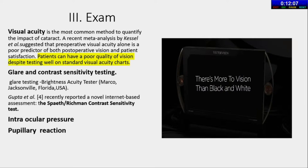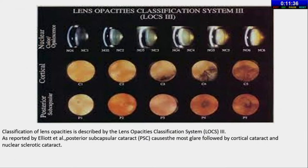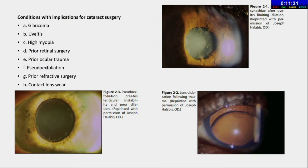The examination includes visual acuity, glare and contrast sensitivity, intraocular pressure, and pupillary reaction testing. Remember, vision is not the only aspect - there is more to vision than black and white. A patient can have poor quality of vision despite good standard visual chart results. You should incorporate contrast sensitivity testing in daily practice, as a gradual progressive decrease in contrast is also a symptom of cataract. Slit lamp examination - well done - is half the battle won. You need to know the LOCS III classification but also keep in mind conditions like glaucoma, uveitis, pseudoexfoliation, and lens subluxation.